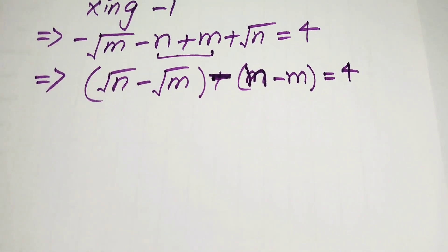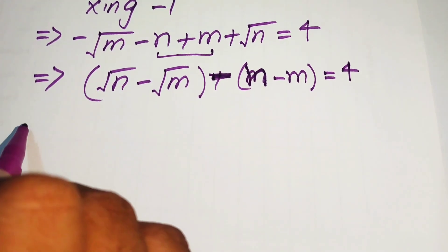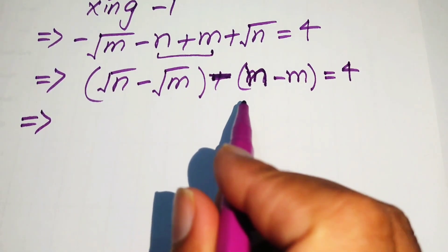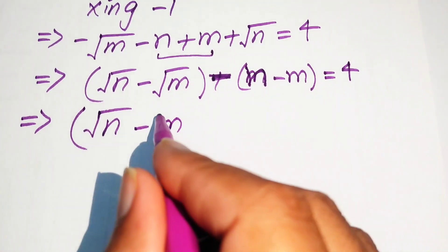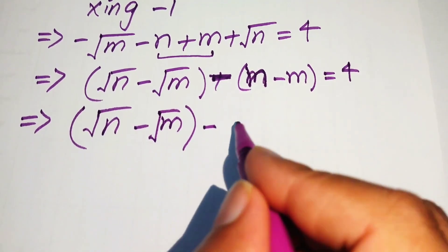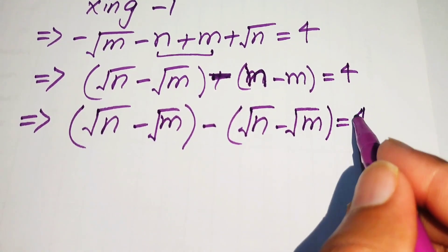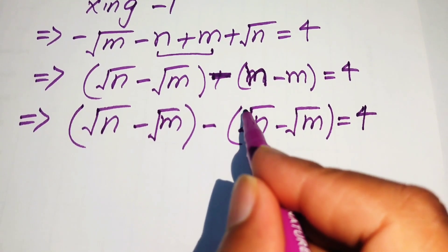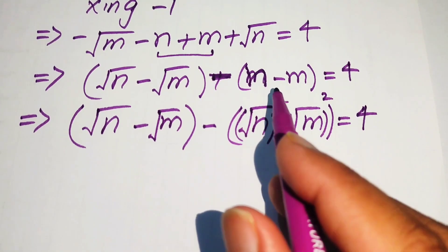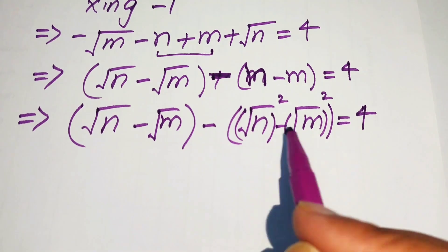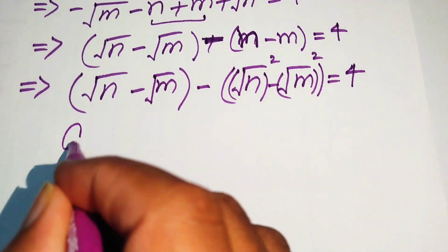Focusing on the first factor — both terms involve a square root sign, but neither term can contain just a square root. So we rewrite this factor by applying square and square root simultaneously to both terms, which allows us to use the difference of squares identity.